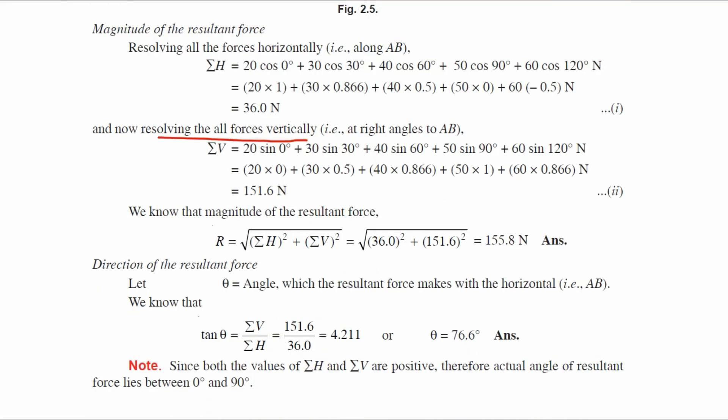Likewise, resolving the forces vertically at right angles to AB: Summation of vertical force equals 20 sin 0 degrees, plus 30 sin 30 degrees, plus 40 sin 60 degrees, plus 50 sin 90 degrees, plus 60 sin 120 degrees. Solving this: 20 times 0, plus 30 times 0.5, plus 40 times 0.866, plus 50 times 1, plus 60 times 0.866 equals 151.6 Newton.